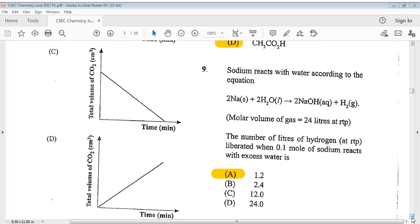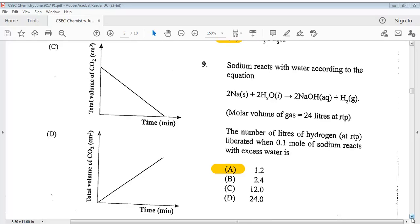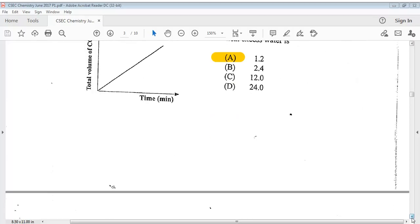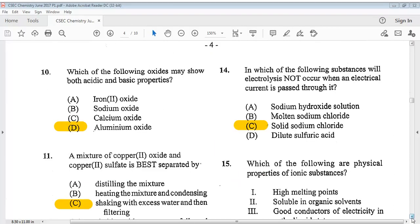Question number 9, you can take a look at that. And the answer for question 9 is A, 1 and 2. Let's go on to question number 10. It says, which of the following oxides may show both acidic and basic properties? The answer is D, aluminum oxide.